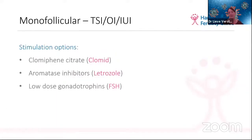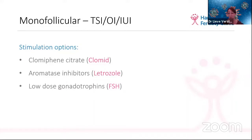The medications we use for monofollicular stimulation are Clomid (clomiphene citrate), letrozole (an aromatase inhibitor), and low-dose gonadotrophins like FSH. Clomid and letrozole are tablets taken for five days. Sometimes if Clomid or letrozole doesn't work, we add low-dose FSH injections — 50–75 units — which is the same medication used for IVF but at a much lower dosage. For monofollicular stimulation, injections are typically given on alternate days rather than daily.